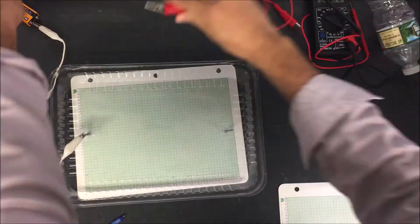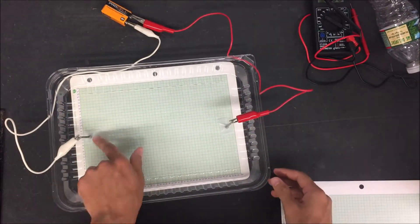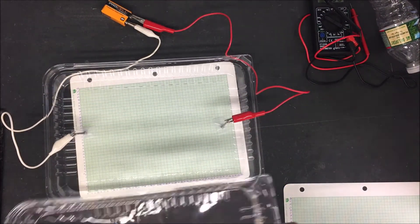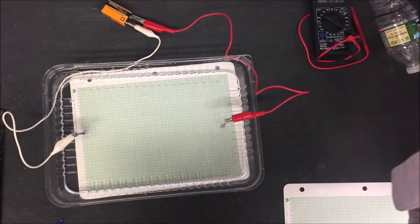Then you're going to use the alligator clips to connect the positive and negative charges onto the nail. Once you've done that, you're going to add about one to two centimeters of water into the container.